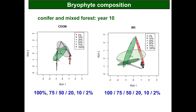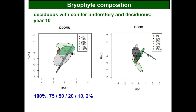Looking at bryophyte composition with the same ordination diagrams, we see changing composition along the gradient of harvesting, just like with vascular plants. In the conifer dominated forest, the 2% and the unharvested control sit at opposite ends, with a really nice gradient: 2%, 10%, 20%, 50%, 75%, and 100%. A similar pattern appears in the mixed forest. The 10% and 2% tend to be a little more different from all the others, but everything is different from the unharvested control. In both the DDOM-U and deciduous dominated forests we get the same gradient — the 100% sitting out by itself at one end, the 2% at the other, and everything else in the middle.